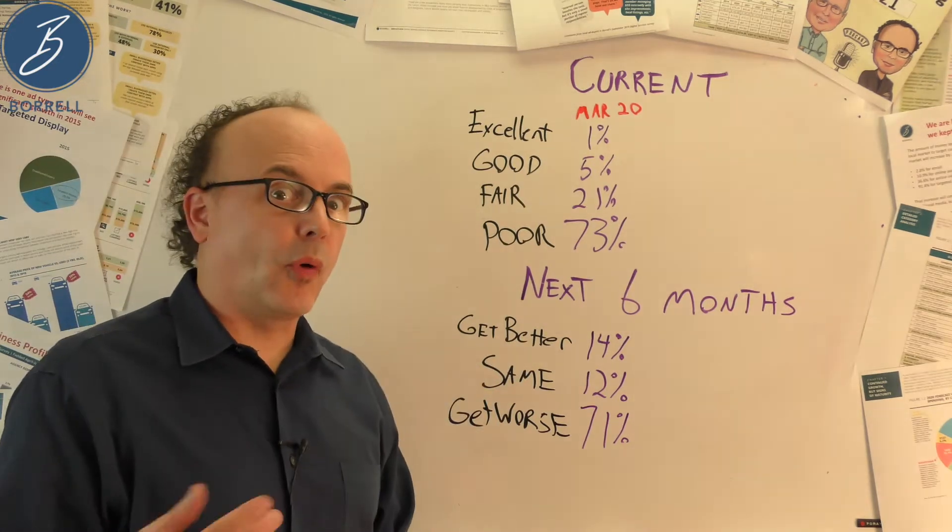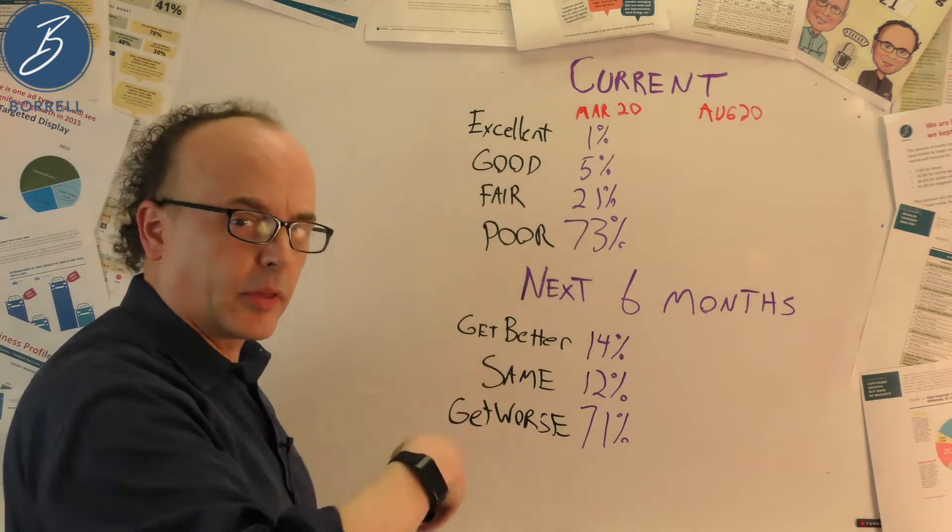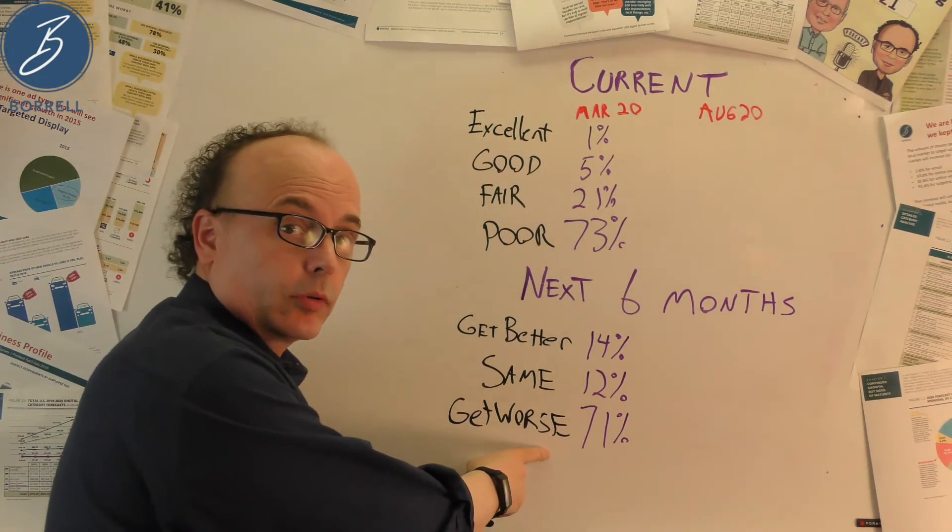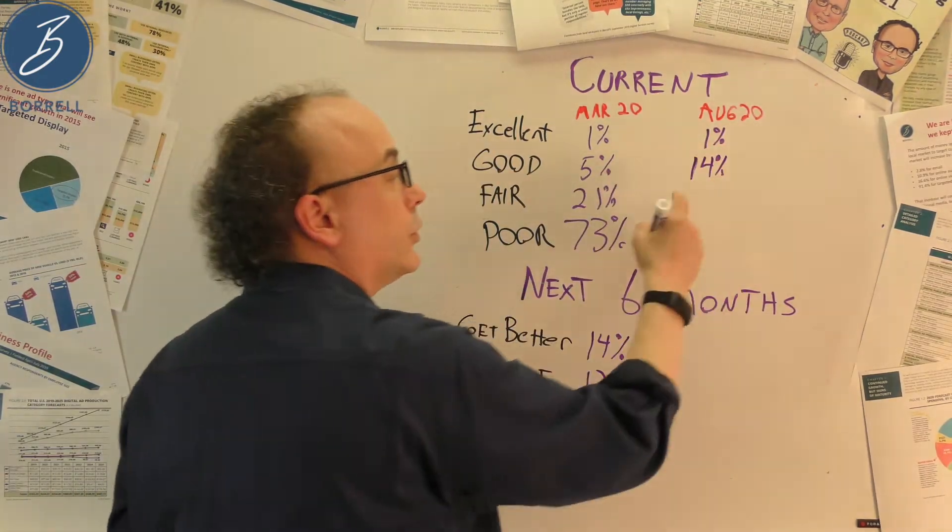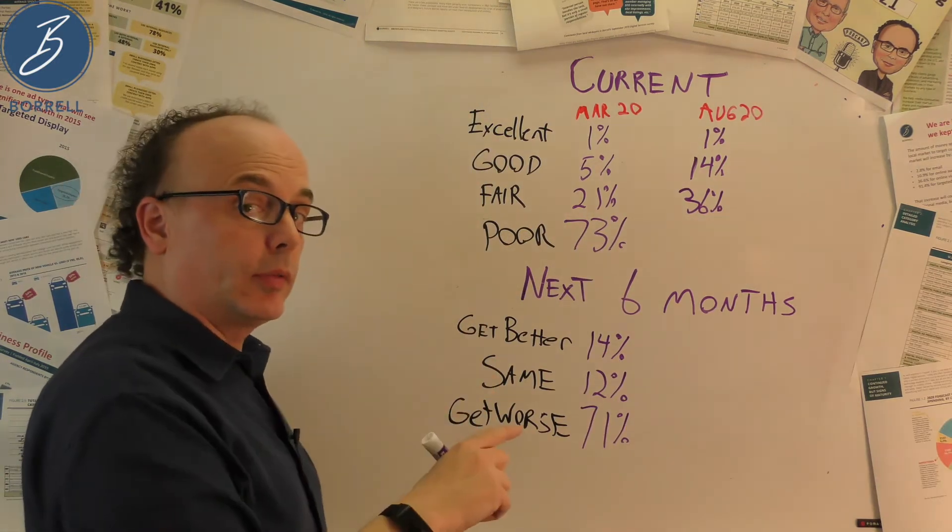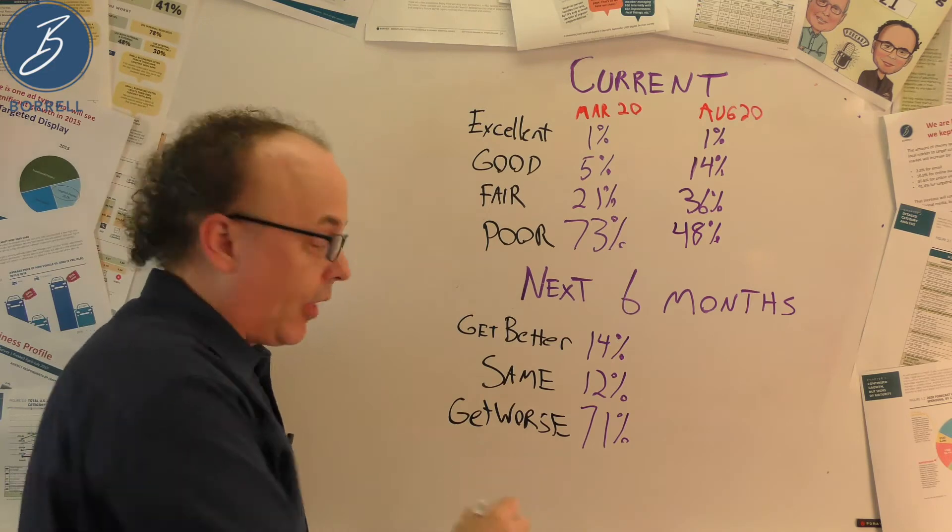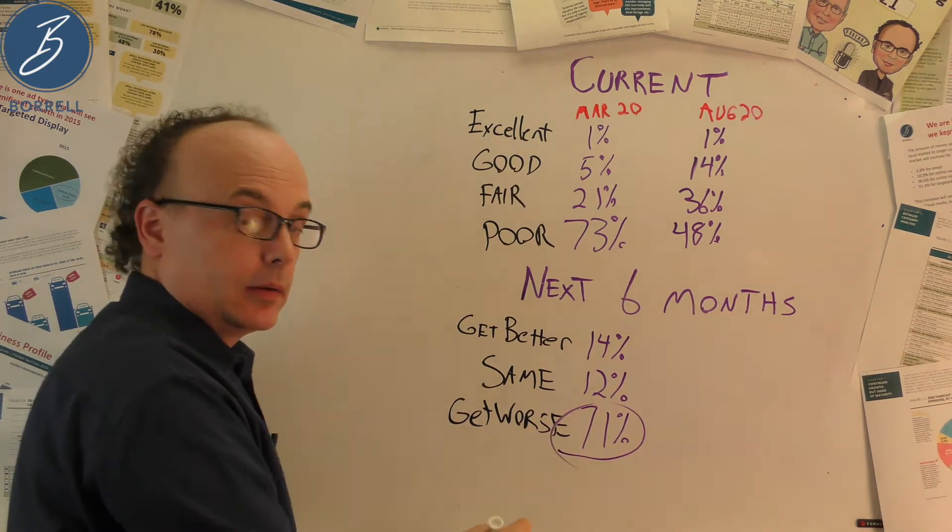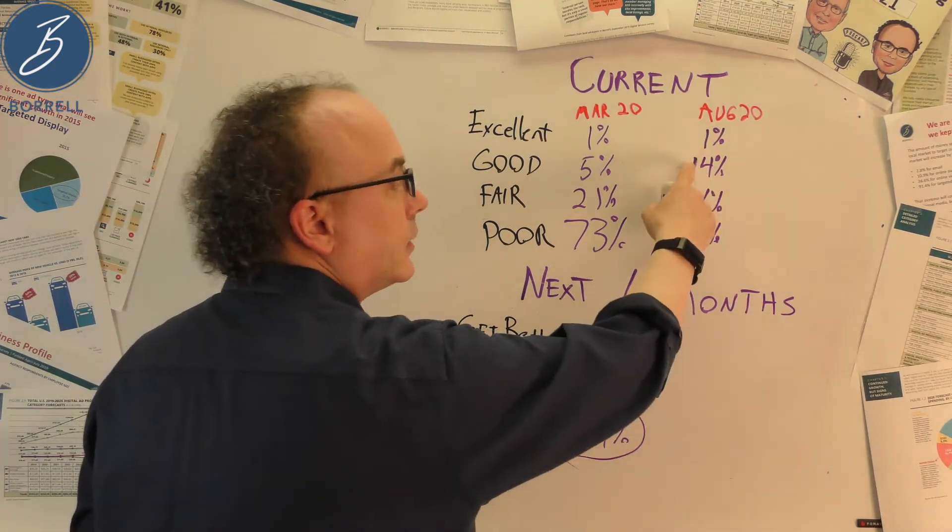So let's go forward in time to August 2020. Six months later. So did things actually get worse? Same there. Good went from 5% to 14%. Fair went from 21% to 36%. Poor went down from 73% to 48%. Still not great, but a lot better than this was indicating.